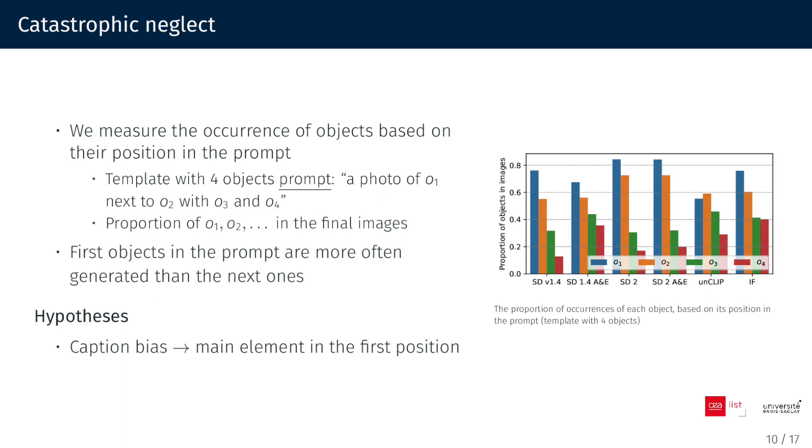Next, we assess the occurrence of objects based on their position in the prompt to answer the question, is there a relation between the position of objects in the prompt and the generation capacity of the models? Notably, the first object is more likely to be generated compared to the next ones. Our primary hypothesis is that the training is biased toward captions, where the main subject is frequently placed at the beginning, but more research is needed.